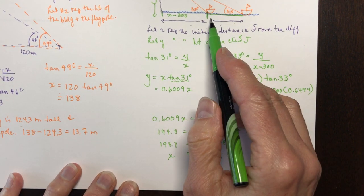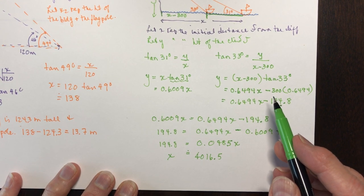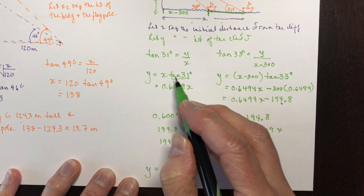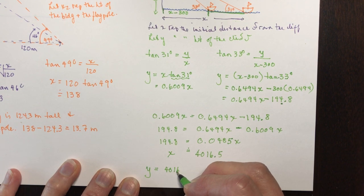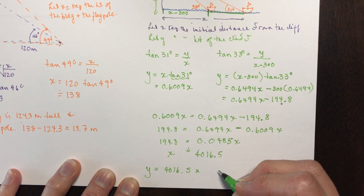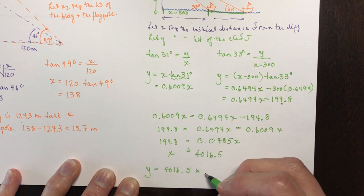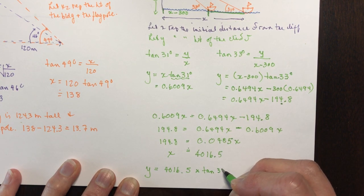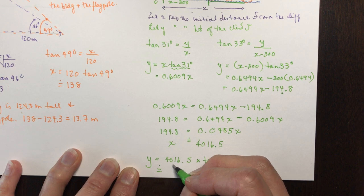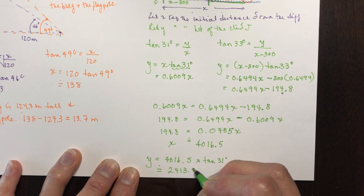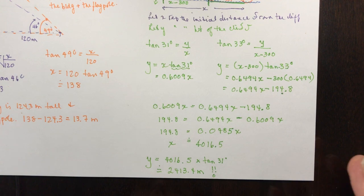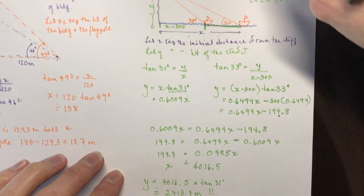We found x but we need the cliff height y. So y equals 4016.5 times tan of 31 degrees, which gives approximately 2413.4 meters. That's one tall cliff! Therefore the height of the cliff is approximately 2413.4 meters.